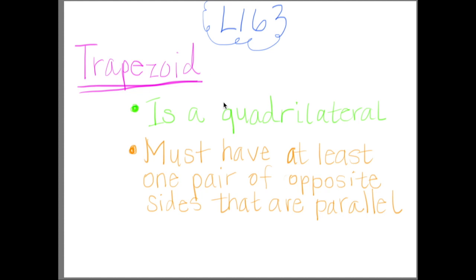Let's get into lesson 16! We are going to be exploring trapezoids — checking out the characteristics of trapezoids, defining trapezoids, and then doing a cool hands-on activity where you'll really understand the angles that make up a trapezoid. We're checking out a few different two-dimensional figures as we wrap up module five: trapezoids today, and then parallelograms, rectangles, rhombuses, squares, and kites.